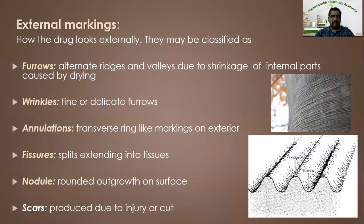Annulations are the transverse ring-like markings on the exterior surface of the plant — it may be a root or a stem. Sometimes fissures may be present — fissures are deep splits extending into the tissues. Sometimes rounded outgrowths on the surface of stem or root can be seen, known as nodules. Sometimes there may be scars in the plant, produced due to injury or cut. These are identification parameters to identify the specific species.